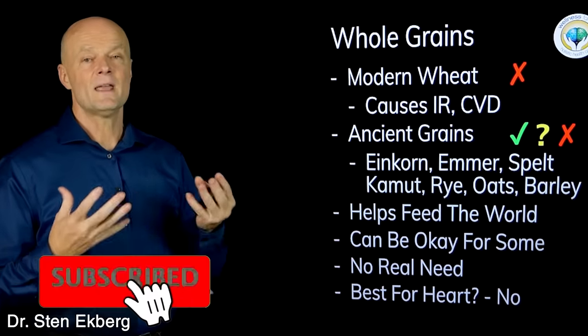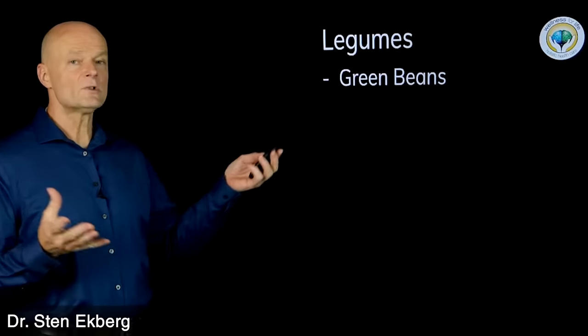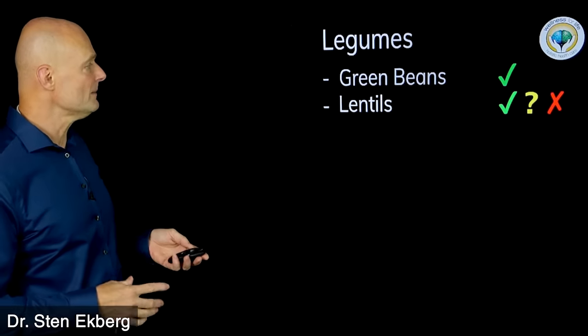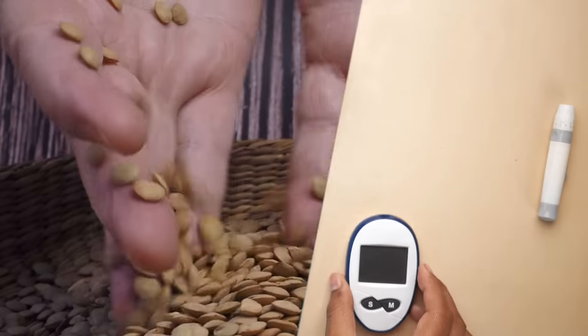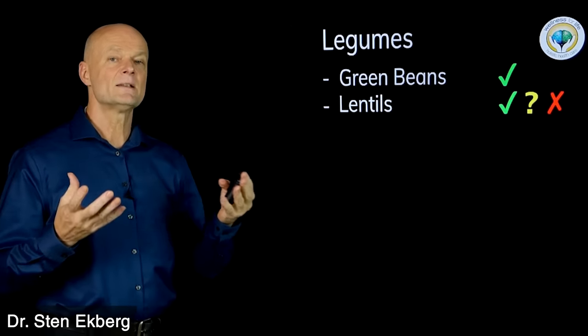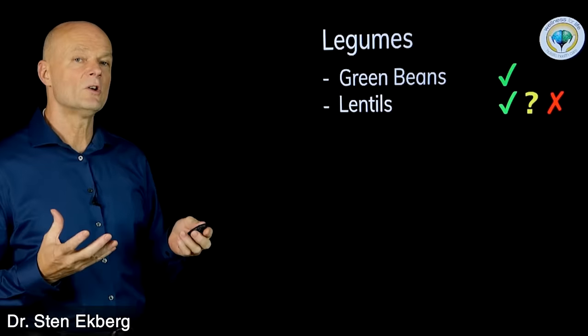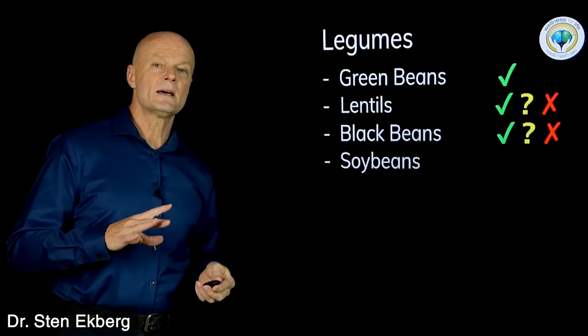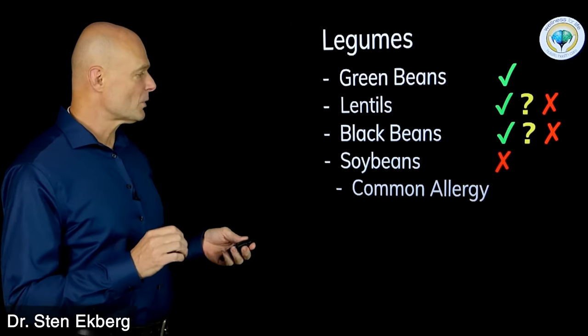Next we have legumes, a huge range of foods. A green bean would be totally fine for almost everybody. Then we have lentils, a huge staple - just like with grains, if you're type 2 diabetic it's probably not so great, but if you're insulin sensitive and metabolically healthy, it helps feed a lot of people. Black beans would be the exact same situation. When we get into soybeans, I would put a big red X on it, maybe a question mark if you make tofu.